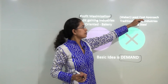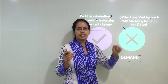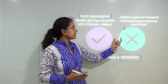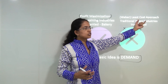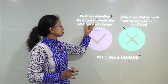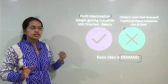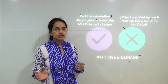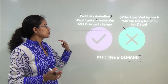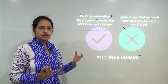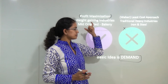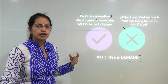Weber focused on heavy industries such as iron and steel, where the least cost approach is the best fit model. However, Lösch tried to explain that profit maximization is best applied in the case of market-oriented industries. So in weight-gaining industries like bakery and beverages, there is a different approach where you focus on profit maximization, and the basic idea to achieve that is to work around demand.